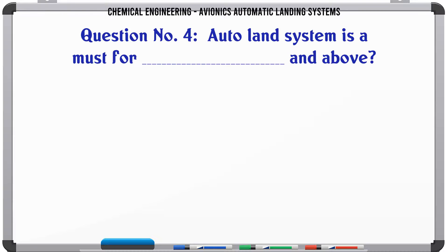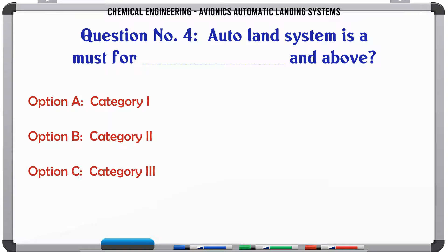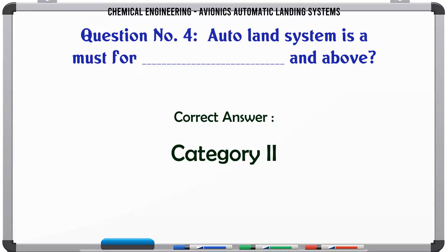Auto land system is a must for and above. A. Category 1. B. Category 2. C. Category 3. D. Category 4. The correct answer is Category 2.